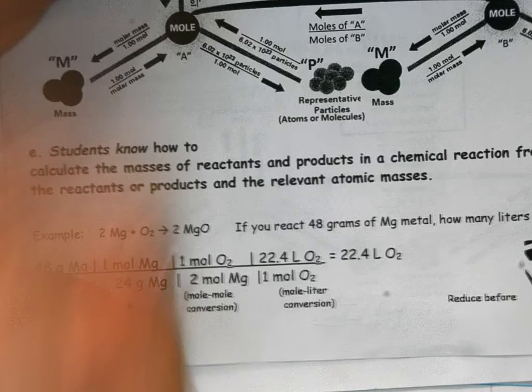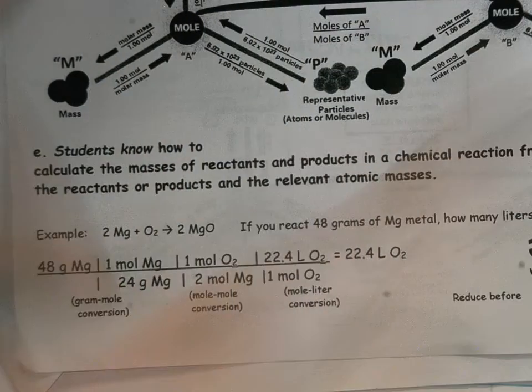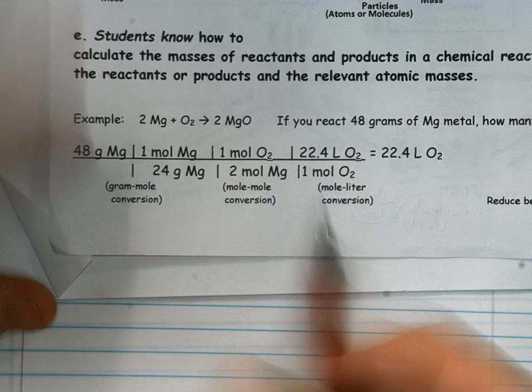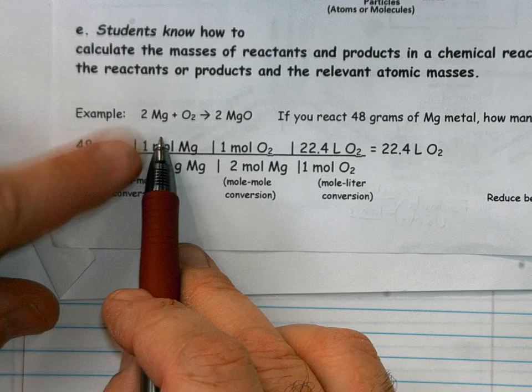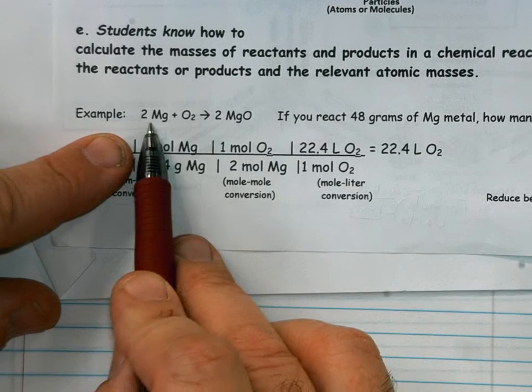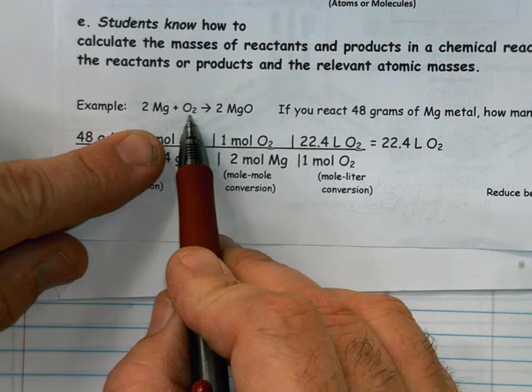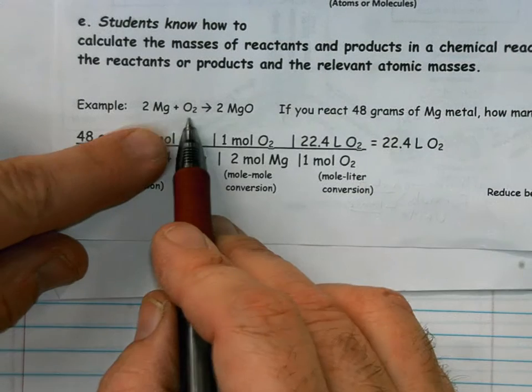We're going to use this equation right here: two moles of magnesium plus one mole of oxygen, that'll be oxygen gas, will react and yield two moles of magnesium oxide.